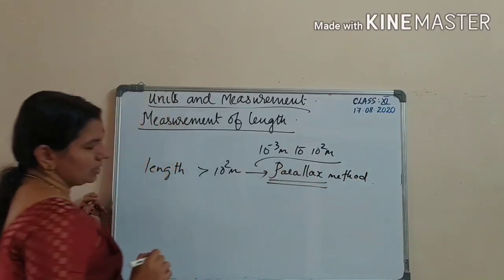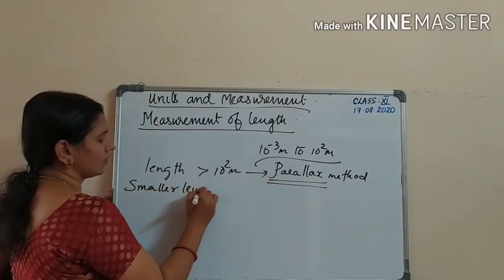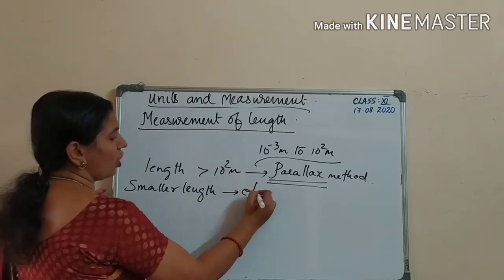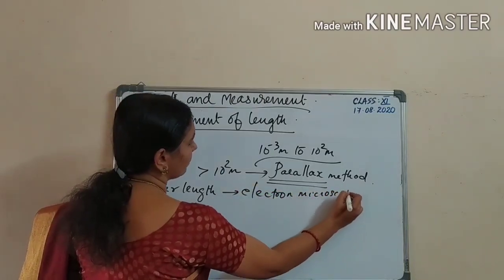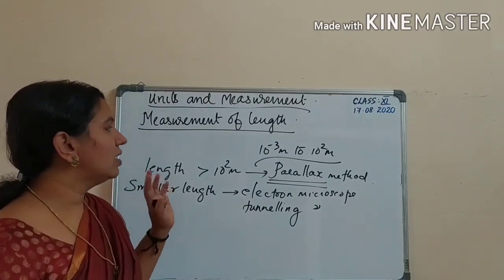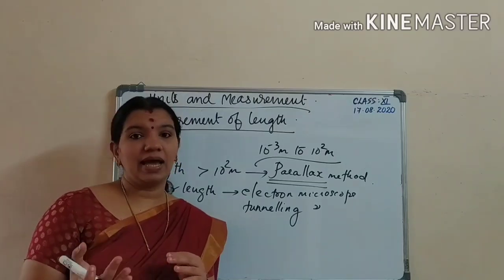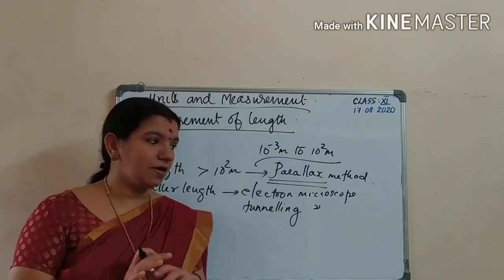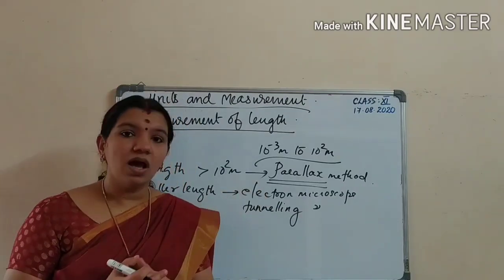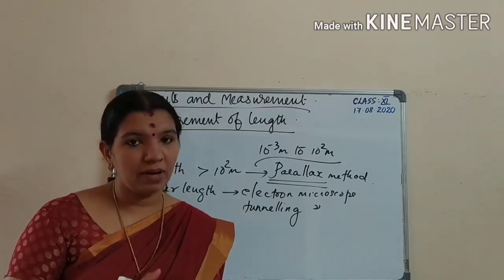If the length is greater than 10² meters, we have to opt for a method known as the parallax method. For smaller lengths, we will use certain microscopes like the electron microscope and tunneling microscope. So the normal range of 10⁻³ m to 10² m can be measured with devices and a meter scale. Lengths greater than 10² m use the parallax method, and for very small lengths we use electron or tunneling microscopes.